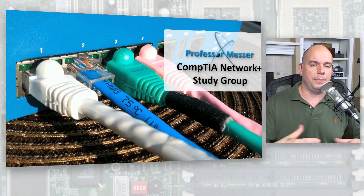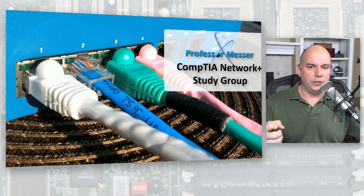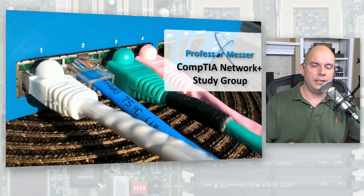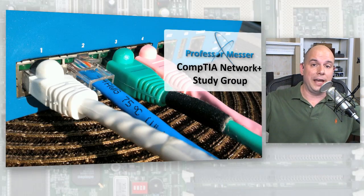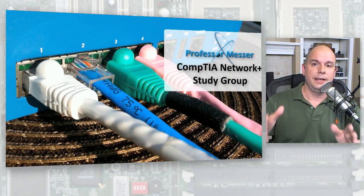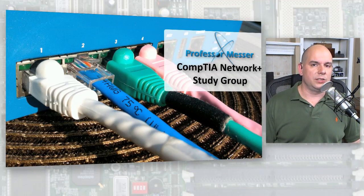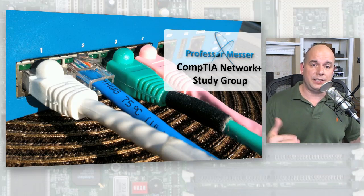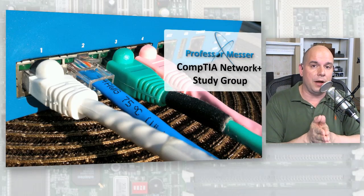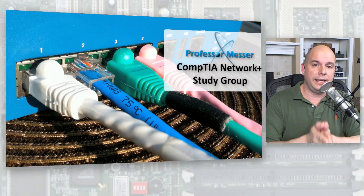I worked in an environment at a life insurance company where I had two core routers connected to my WAN, and then I had 50 remote locations. Every single site has a router connecting to that WAN link. We did not use static routes. A static route is one where you've gone into every router and configured that router to know how to get to any other location.